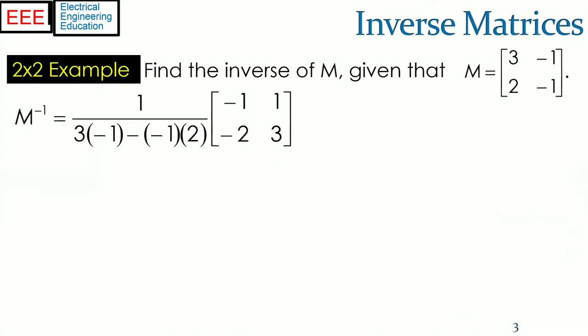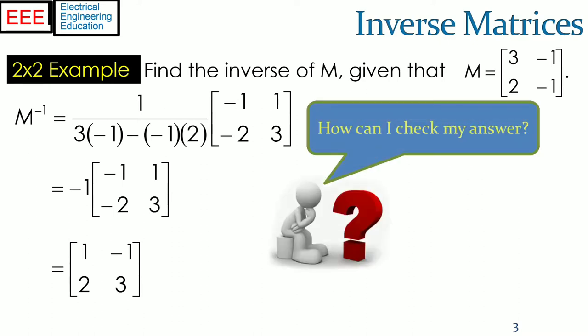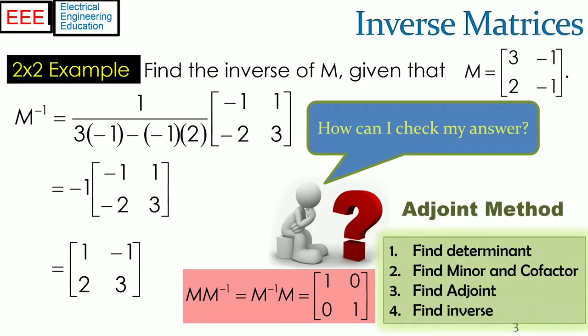An example of 2 by 2 matrix M is shown. We have to find the inverse of M. The determinant is equal to 3 times 1 minus 1 times 2 which is equal to minus 1. The cofactor matrix and finally the inverse matrix is as shown. As shown in the previous slide, to check the result, the product of M and its inverse should be an identity matrix.